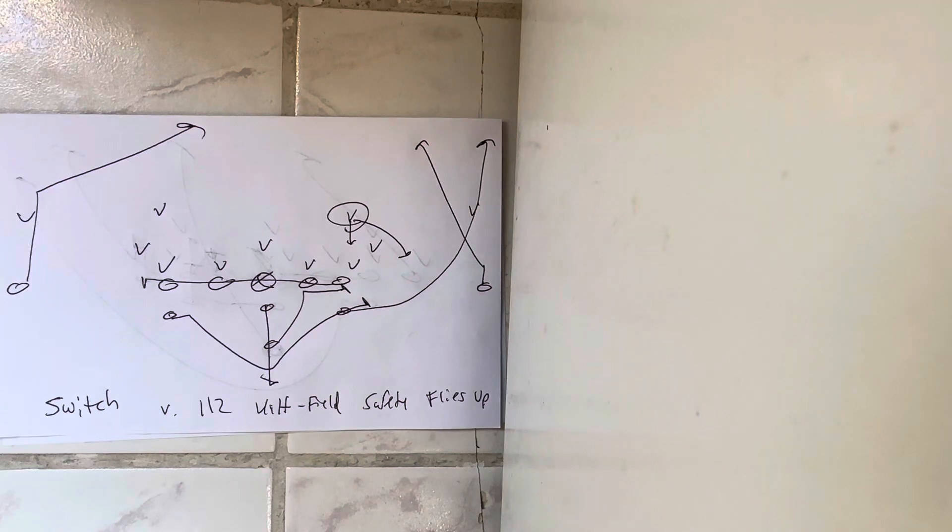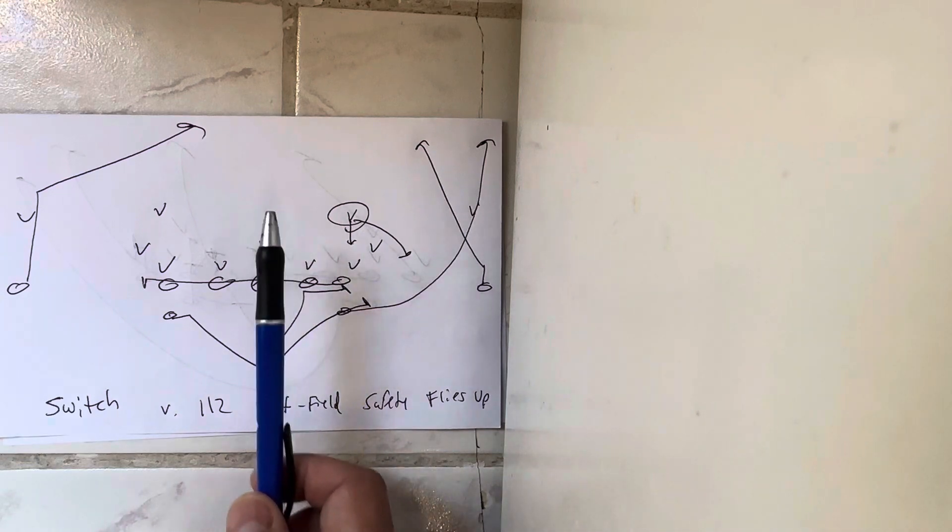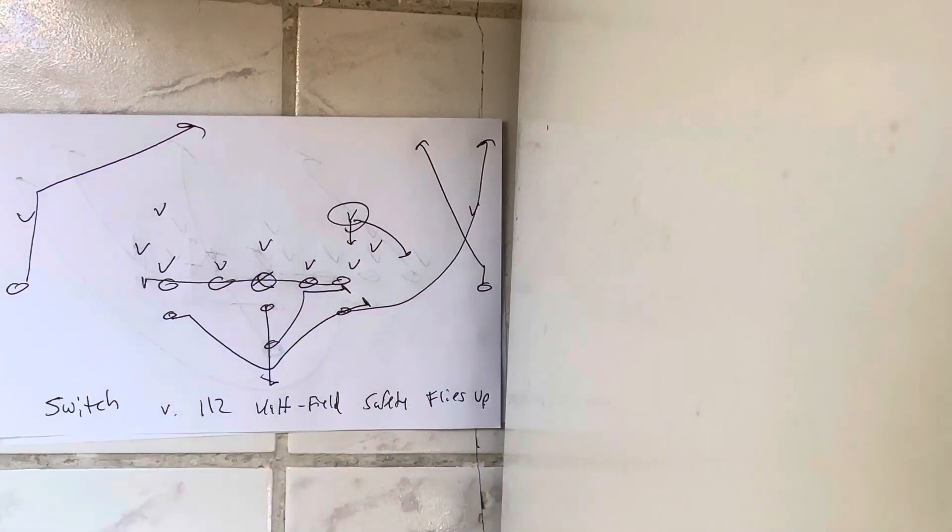But the whole mindset I want you to have, and what the takeaway from this video is, is when a half-field safety flies up, you don't want to go after the half-field safety. You want to go after the corner. That's what Paul Johnson did, what Air Force does, because when a half-field safety flies up, it puts so much pressure on the corner that he can't be right. So switch when that happens.